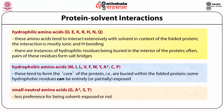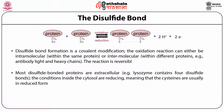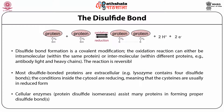The disulfide bond is a covalent bond formed within the protein. Most disulfide-bonded proteins are extracellular, such as lysozyme, which contains four disulfide bonds. The conditions inside the cytosol are reducing, meaning cysteines are usually in reduced form. Cellular enzymes such as protein disulfide isomerase assist many proteins in forming proper disulfide bonds.